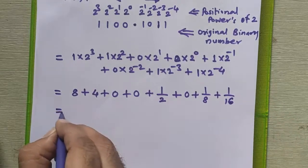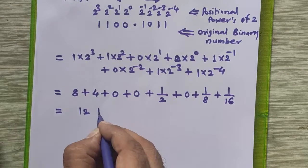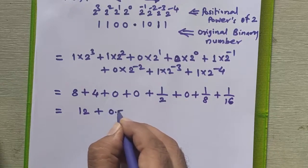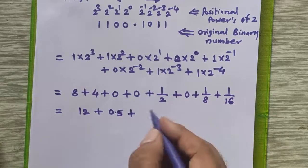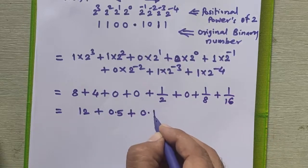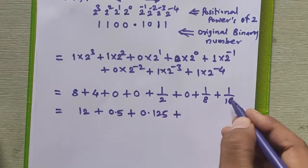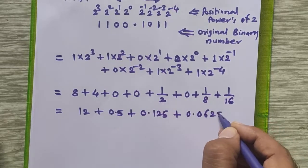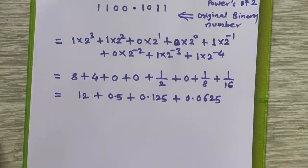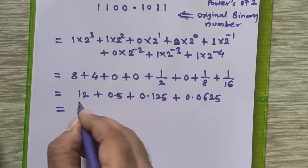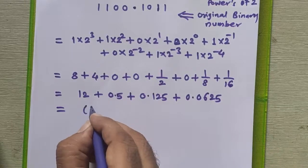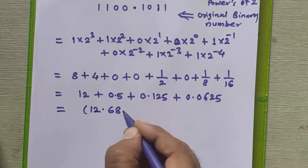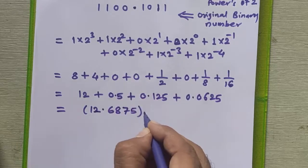We will solve this now. 8 + 4 = 12. The zeros contribute nothing. 0.5 + 0.125 + 0.0625 — you can verify these using a calculator. At last we add all these terms to get our exact decimal equivalent. This becomes 12.6875 in decimal.